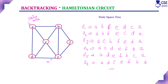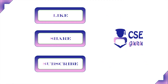The Hamiltonian circuit starts from one starting vertex, visits all other vertices in the given graph exactly only once, and returns back to the starting vertex. For the given graph, more than one solution is possible. We can identify all solutions by constructing the state space tree using the backtracking technique. Thank you for watching this video.